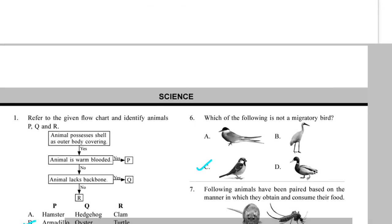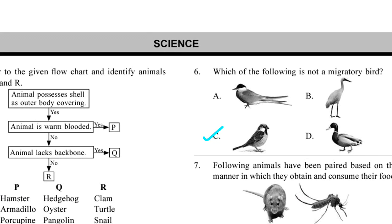Question 6. Which of the following is not a migratory bird? Answer is option C, Sparrow.